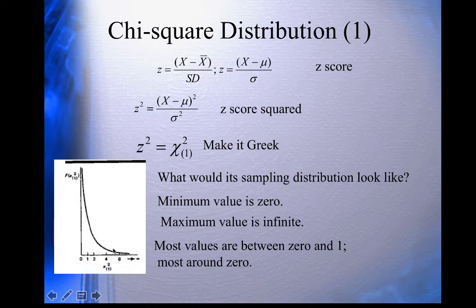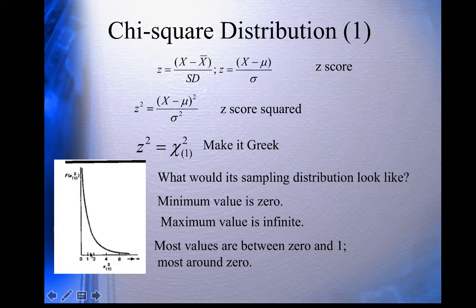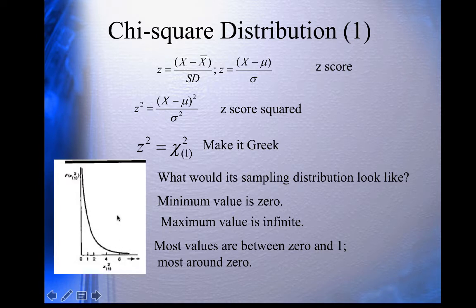If we square the deviates from the unit normal and look at the resulting distribution, we get what's called chi-square with one degree of freedom. The unit normal has a mean of zero, and most scores are close to that. When we square small numbers, they get even smaller — 0.1 squared is 0.01. So most values will be close to zero. A value of two standard deviations out, squared, gives four. We don't have negative numbers because we're squaring everything. That's what the distribution of squared deviates from the unit normal looks like — chi-square with one degree of freedom.